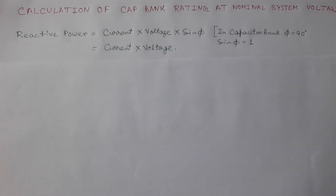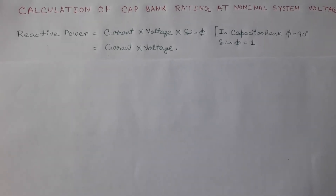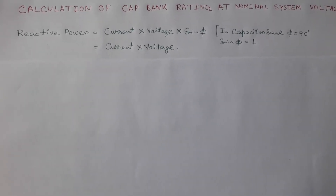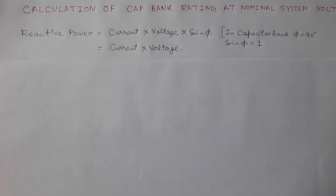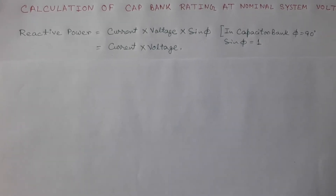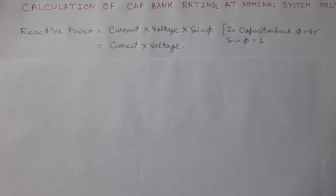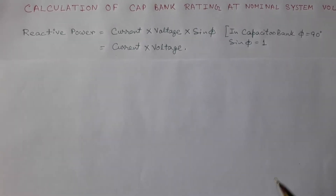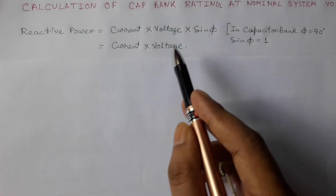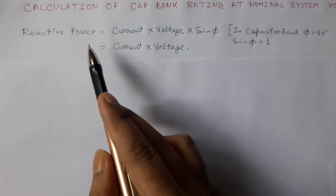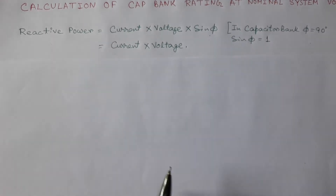Reactive power is the multiplication of current, voltage, and sin(φ), where φ is the angle between voltage and current. In a capacitor bank, current leads voltage by 90 degrees, so sin(φ) equals 1. Therefore, we can write reactive power equals current multiplied by voltage.